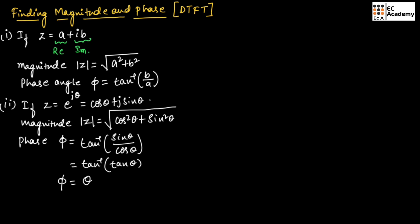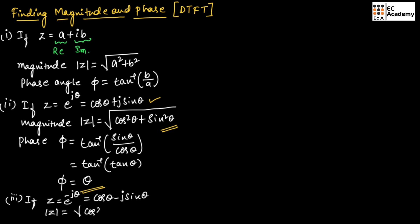So if we get the expression in this form, we can use magnitude as √(cos²θ + sin²θ) and phase as θ. Similarly, if Z = e^(−jθ), we can write this as cos θ − j sin θ, so the magnitude is √(cos²θ + sin²θ) and the phase angle will be −θ. Remember that cos²θ + sin²θ = 1, so this magnitude value equals 1.